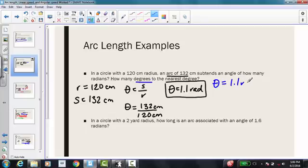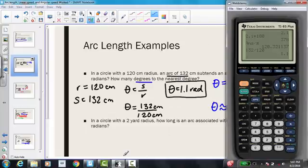If theta equals 1.1 radians, I can multiply that by 180 degrees over pi radians. My radians are going to cancel, and I'm going to be left with theta is approximately 1.1 times 180. Don't forget to divide by pi. On a TI-83 calculator, your pi button can be found by hitting second, and then the caret button, or the button directly above the division button.